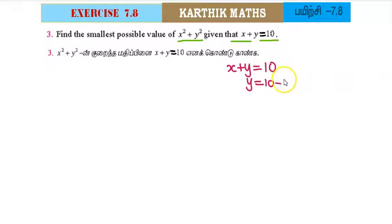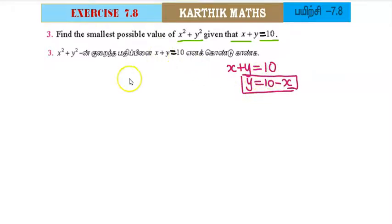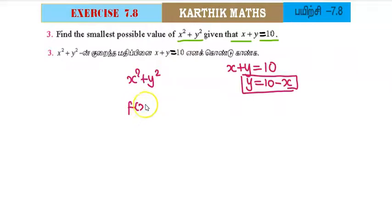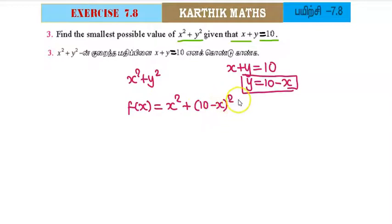We have x plus y equal to 10, so y equals 10 minus x. This gives us f(x) equal to x² plus y², which is x² plus (10 minus x)².